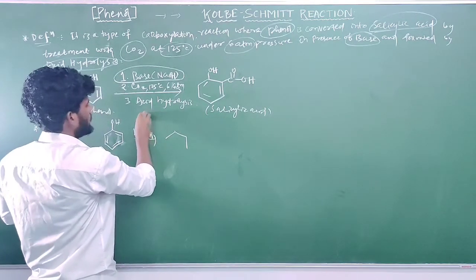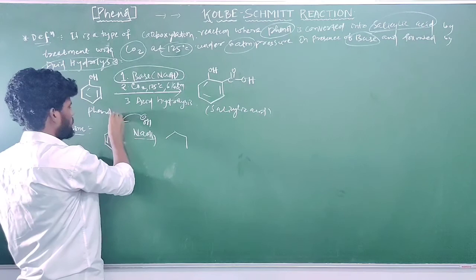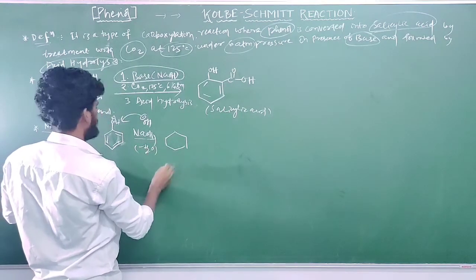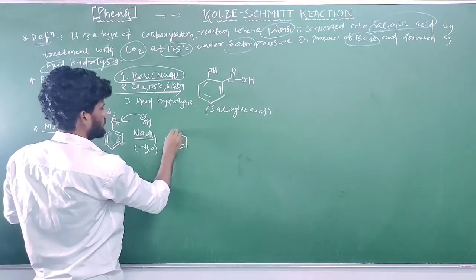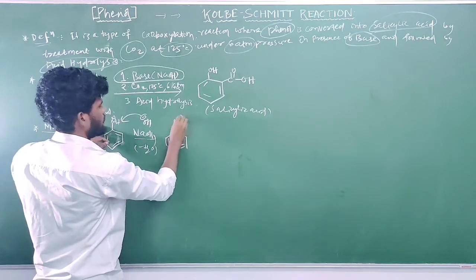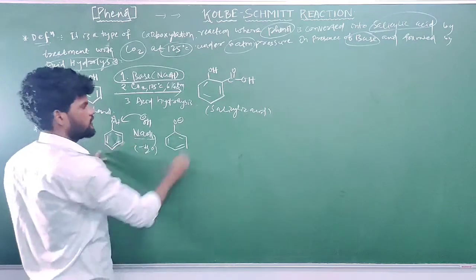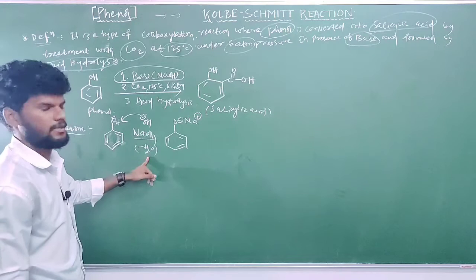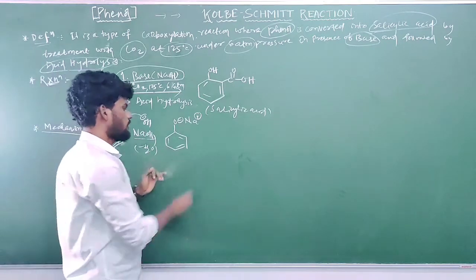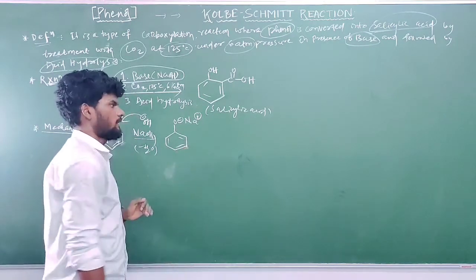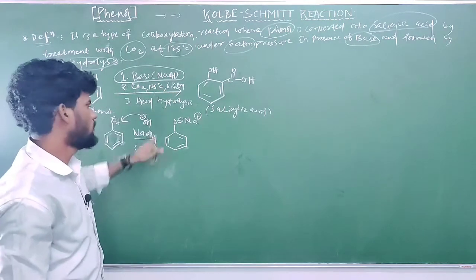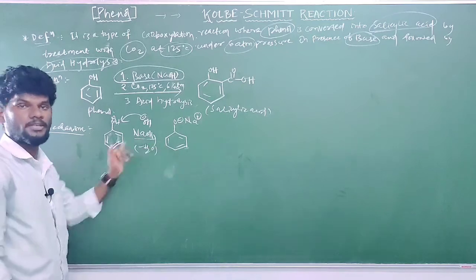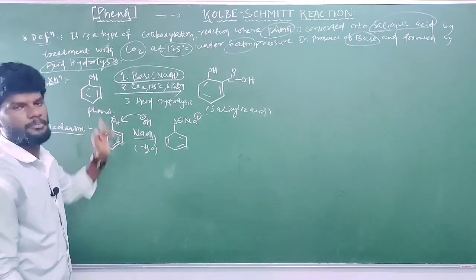The OH minus takes the hydrogen, the bond moves over to oxygen forming O minus, and water is released. The product is the phenoxide ion (sodium phenoxide). This is the first step — formation of phenoxide ion. Phenoxide ion is more reactive than phenol, and that is why we use base in the first step.